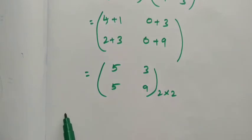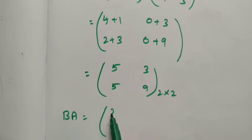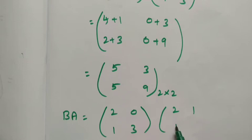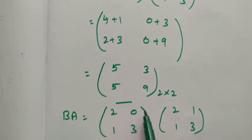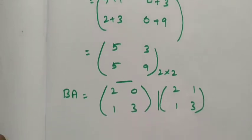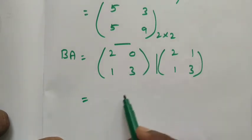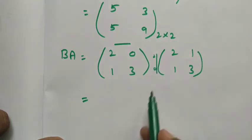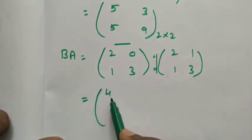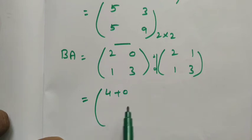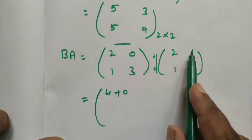Next we find BA. We put matrix B first: [2, 0; 1, 3], then matrix A: [2, 1; 1, 3]. Taking the first row of B with the first column of A: 2×2 = 4 plus 0×1 = 0, giving 4. First row with second column: 2×1 = 2.